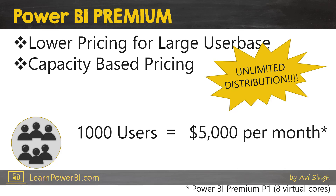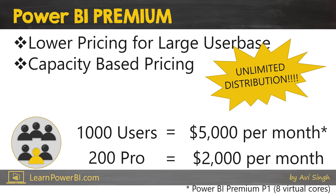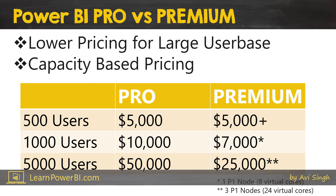You're also going to need some users to author those reports — these are your pro users — and for them you'll have to buy pro licenses. Let's say amongst a thousand users, 200 of them need pro licenses. Pro licenses are $10 each, so that's $2,000 per month, coming to about $7,000 per month total. You can see how this is a savings compared to the pro license, though of course pricing might change.